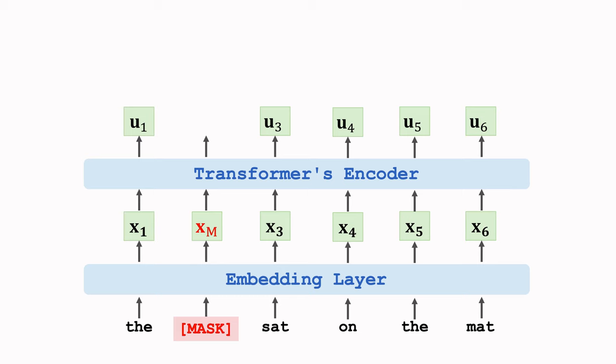Feed vector um into a softmax classifier. It performs multi-class classification. The number of classes is the vocabulary size. If the dictionary has 10,000 words, then the number of classes is 10,000. We know that the masked word is cat. So we hope the prediction made by the softmax classifier is cat.